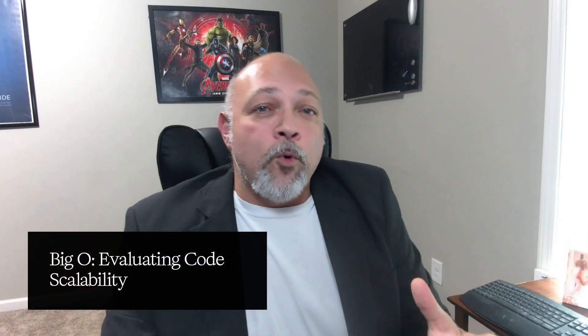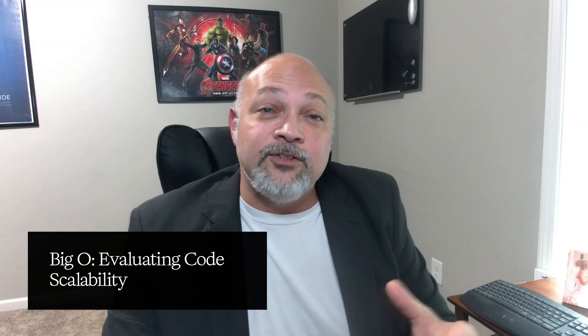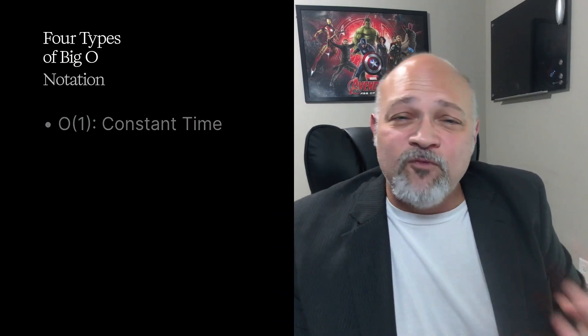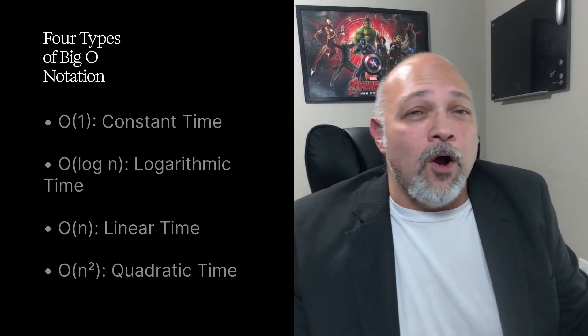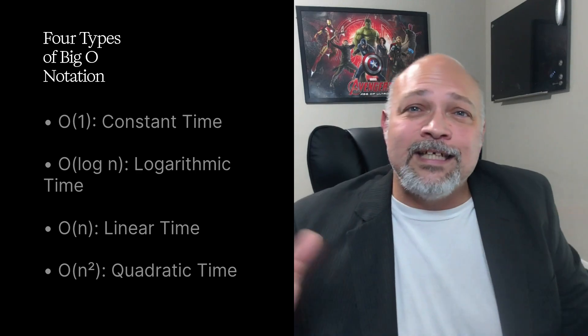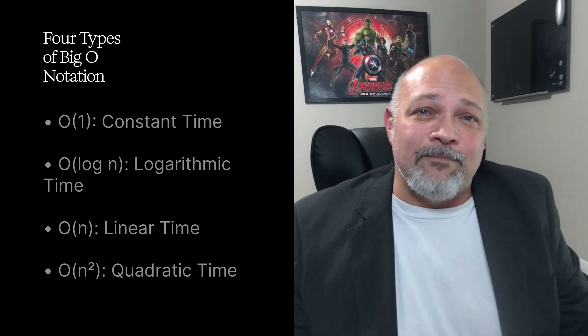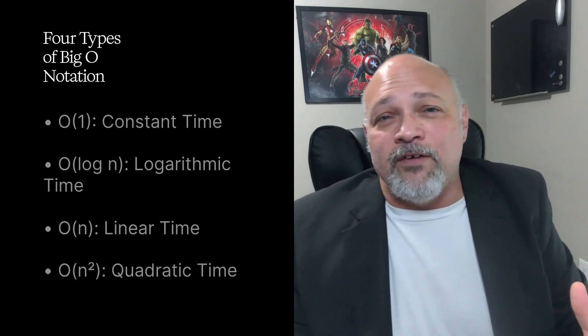What is Big O? Big O is a report card for how your code scales as your data grows. There are four different sections. O(1) — this is constant time, like grabbing a book off your desk.